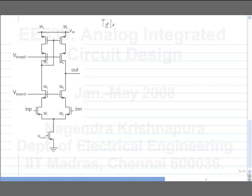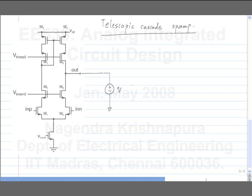This is the telescopic cascode op-amp. As usual, to calculate the noise we bias the output with the quiescent value of the output. While calculating the noise, the inputs are also biased at the common mode voltage and the differential input is set to zero. What we need to do is analyze the noise from each component — we go through every component, add the corresponding noise current to that component, and see what happens to the output current.